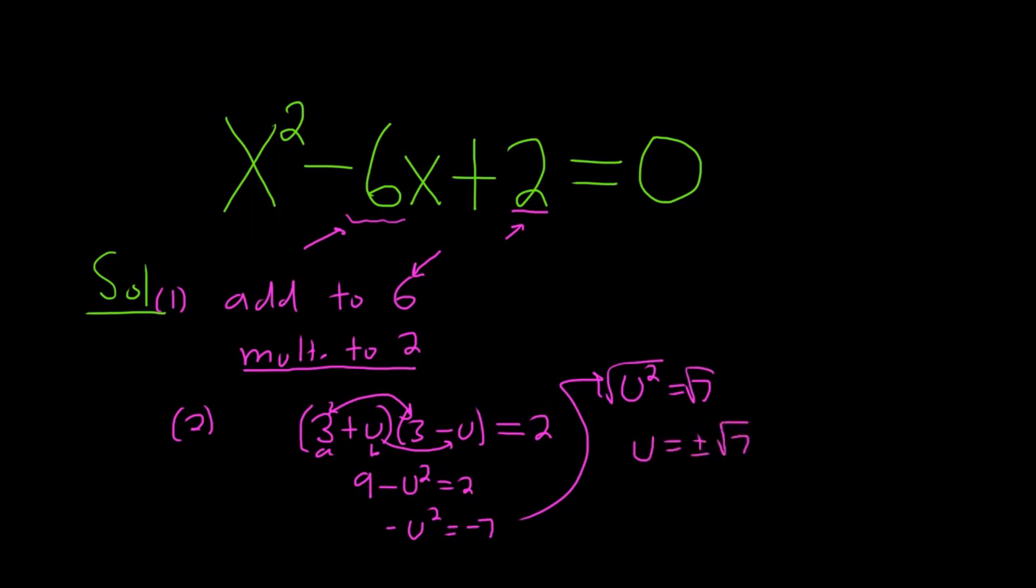We're almost done. We know the answers are of the form 3 + u, 3 - u. So the answers are going to be simply 3 plus or minus the square root of 7. And that's how you do it Po-Shen Loh style.